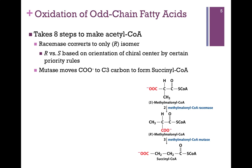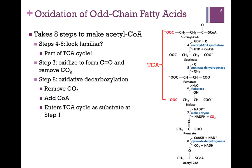A mutase enzyme will then move that carboxyl group from carbon 2 to carbon 3, and the product is succinyl-CoA. That should sound familiar because it is one of the intermediates in the citric acid cycle. For further processing, we can simply use the enzymes of the citric acid cycle.